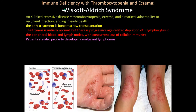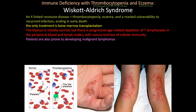The last condition is immune deficiency with thrombocytopenia and eczema — Wiskott-Aldrich syndrome. If a patient has low platelet count and eczema, think Wiskott-Aldrich syndrome. Kids have eczema on their knees, hands, and other common eczema locations.